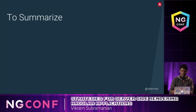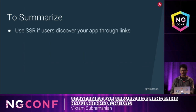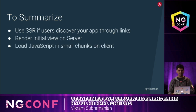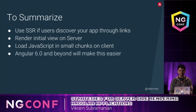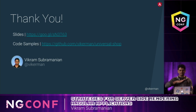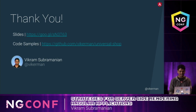To summarize: use SSR if you want your users to discover apps through links. Render the initial view on the server, and load the JavaScript in smaller chunks. Angular 6.0 and beyond will make this easier. Slides are available, and I've put up the experiment app — it has four levels starting from the regular app up to level four, which is the fully hacked-up version. Thanks a lot, I hope you enjoyed this talk.